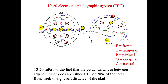We can mount many electrodes on the scalp. We use the abbreviation F for the frontal area, T for the temporal area, P for the parietal area, O for the occipital area, and C for the central area.